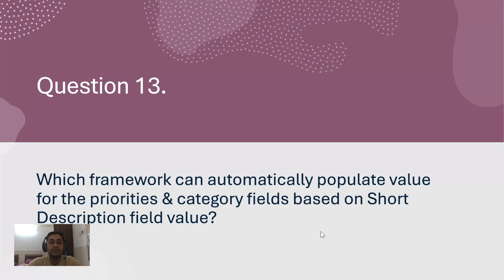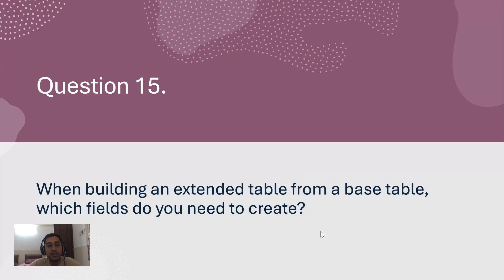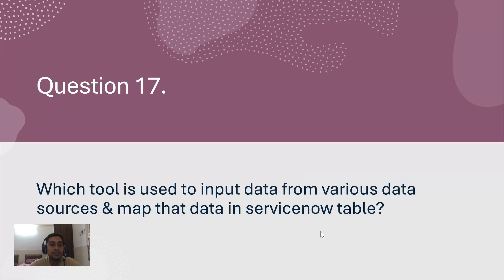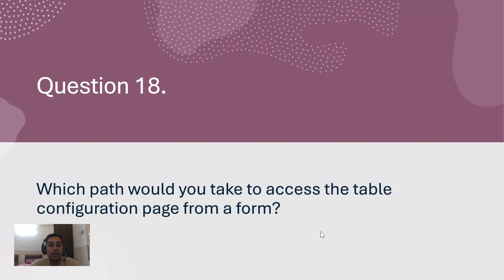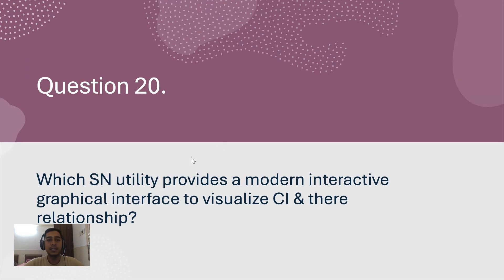Question 12: Which tool is used to define the relationship between fields in an import set table and a target table? Question 13: Which framework can automatically populate values for the priority and category fields based on the chart description field value? Question 14: On a knowledge base record, which table would you use to define which users are able to write articles to the knowledge base? Question 15: When building an extended table from a base table, which fields do you need to create? Question 16: Which attributes of a field can a UI policy action change on a form? Question 17: Which tool is used to input data from various data sources and map that data to a ServiceNow table? Question 18: Which path would you take to access the table configuration page from a form? Question 19: Which actions will allow you to personalize the layout of columns in a list?